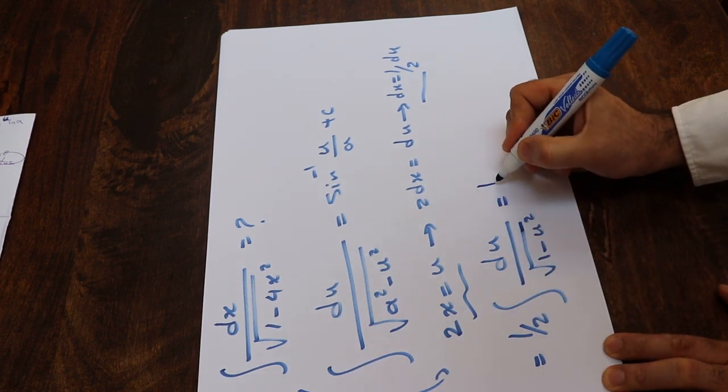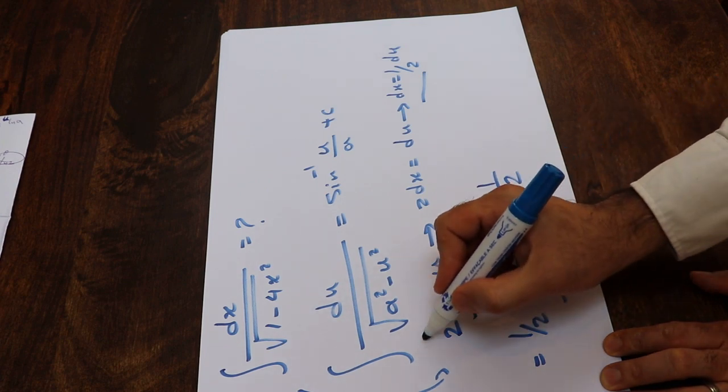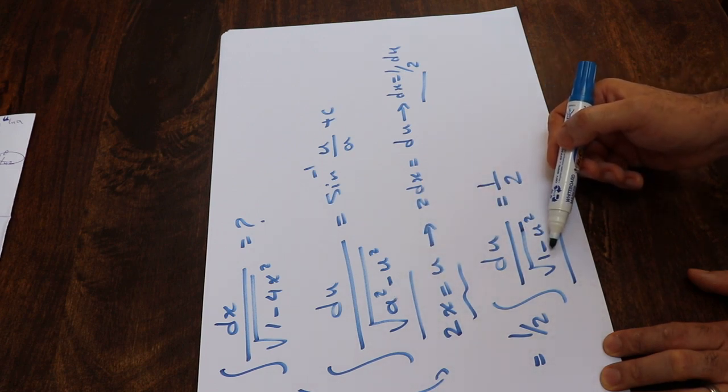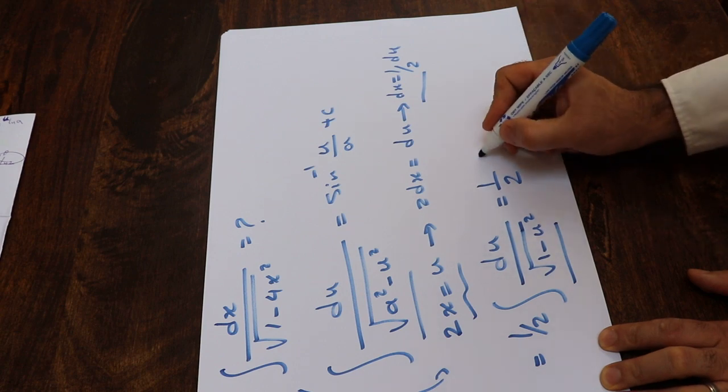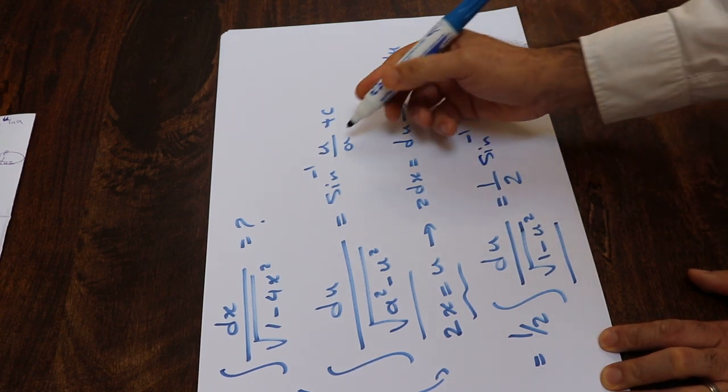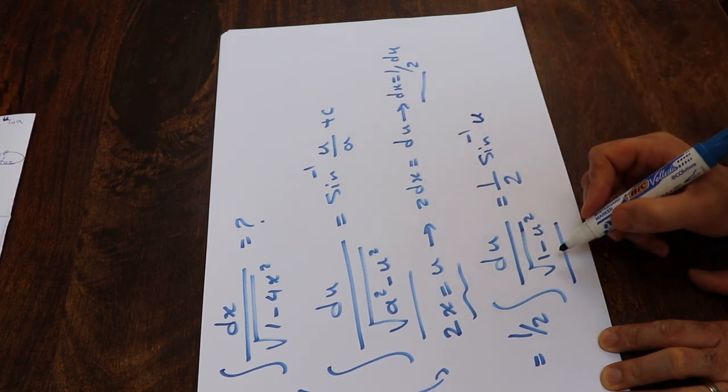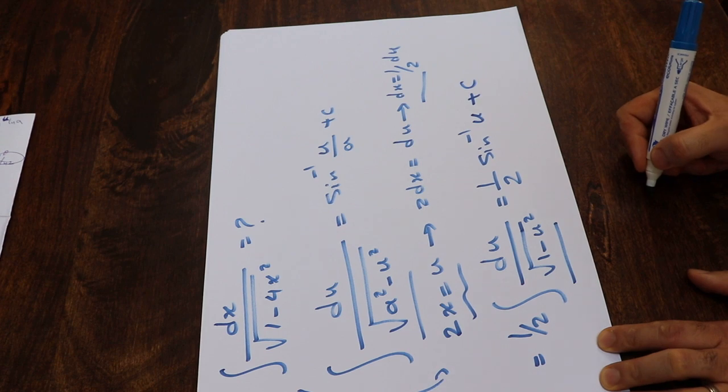That can be equal to 1 divided by 2, and if you compare this integral now with this formula, you see they have the same format, except here a is equal to 1. So using this formula, this integral will be equal to sin⁻¹(u), that is u divided by a, a in this case is equal to 1, plus c, that's the constant of the integral.